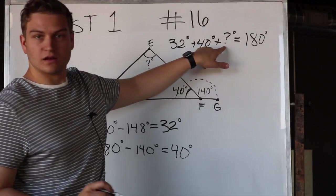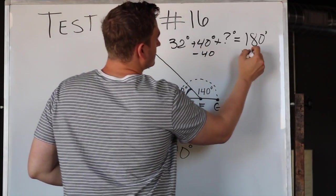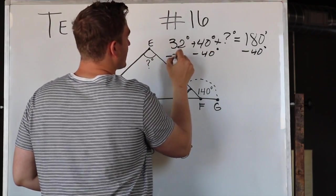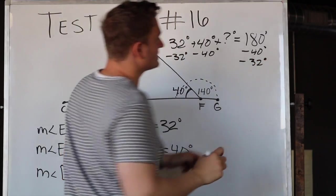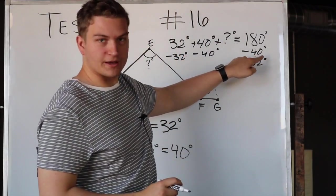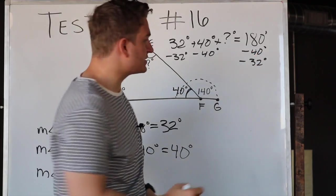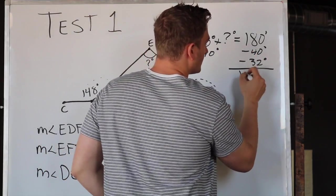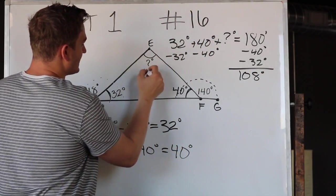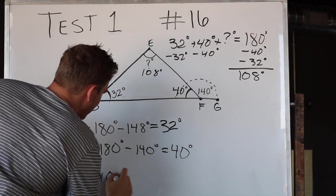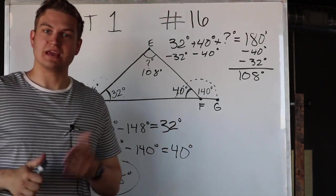If we solve for the measure of angle DEF, we'll subtract 40 and we'll subtract 32 from both sides. 180 minus 40 is 140. 140 minus 32 is 108 degrees. So the measure of angle DEF must be 108 degrees. And that, my friends, is your answer.